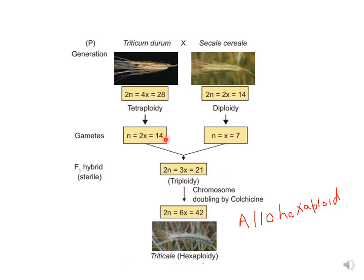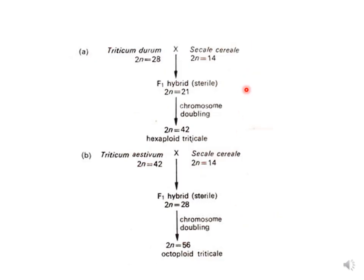Another slide shows how hybridization took place between Triticum durum — another tetraploid species of wheat — and Secale cereale. 14 chromosomes came from the tetraploid and 7 from the diploid species, giving 21 chromosomes, forming a hexaploid species of Triticale. Triticale is thus present in both octaploid and hexaploid forms. Hexaploid Triticale was formed by fertilization between Triticum durum and Secale cereale, while octaploid Triticale was formed when hybridization took place between Triticum aestivum and Secale cereale.